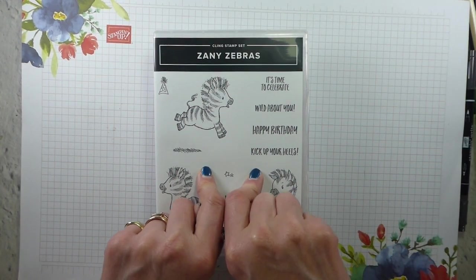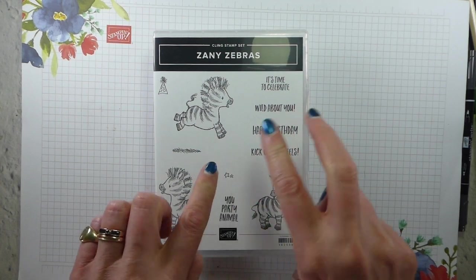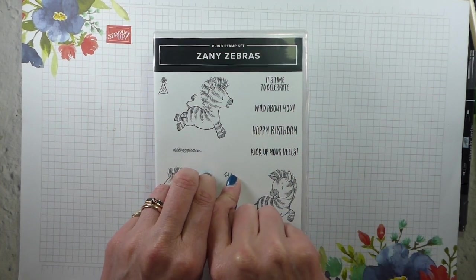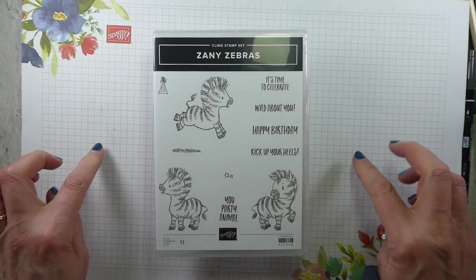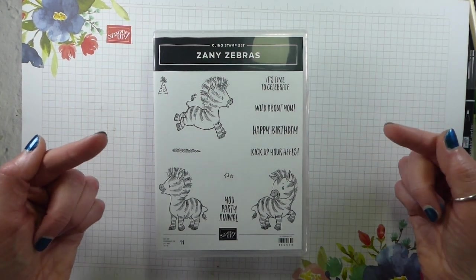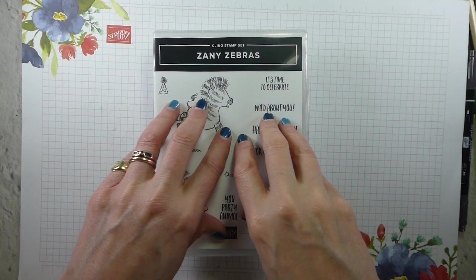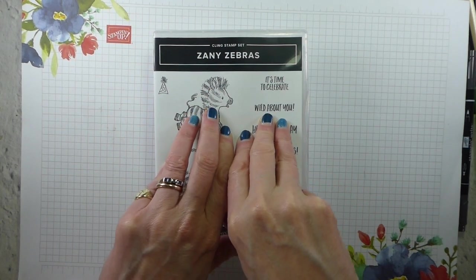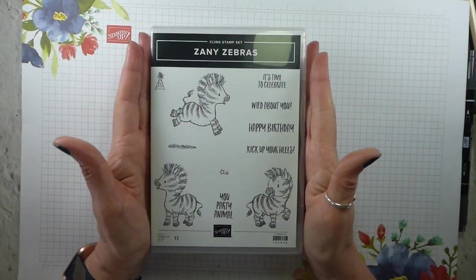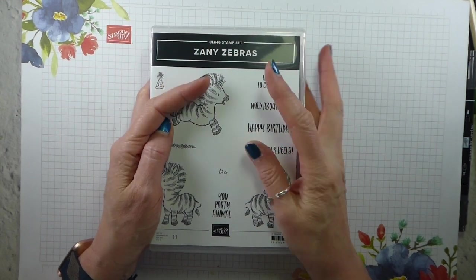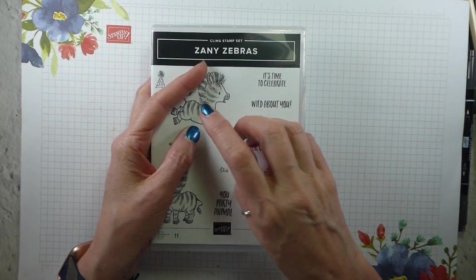It was my Simple Stamping Saturday project, and we made three projects, as ever. If you want to see the projects, all three of them, you'll see one of them in a minute, then just pop over to my blog, and it will be the post previous to this one, because this is on Monday, the 6th of July, and the post with the Zany Zebra Simple Stamping Saturday was on the 4th of July.